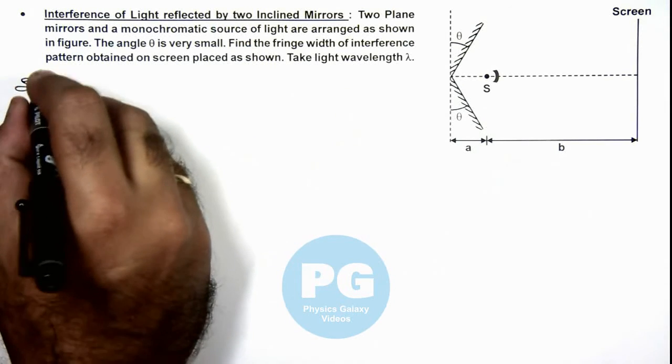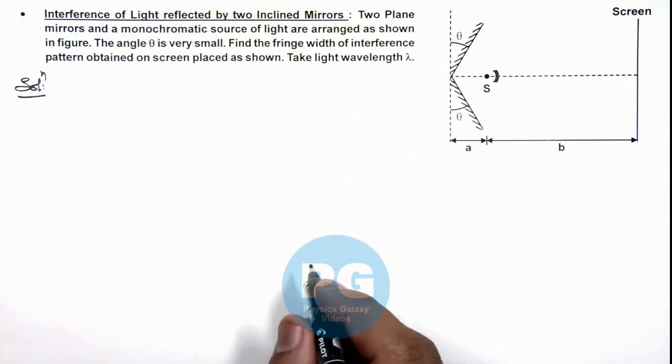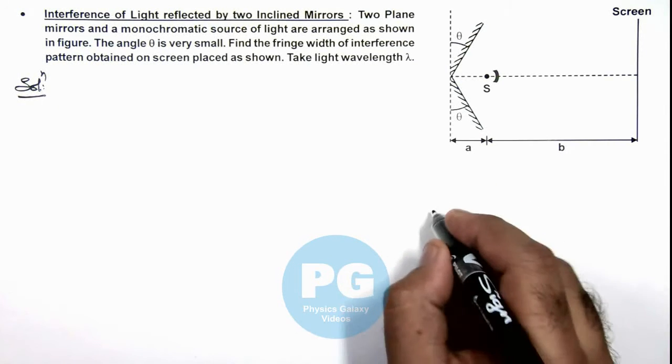So here first we'll analyze the given setup as a limiting case of Young's double slit experiment. To analyze it, I'll redraw the figure.